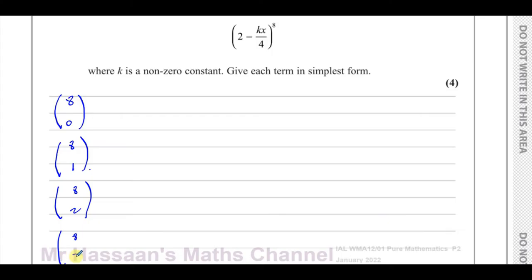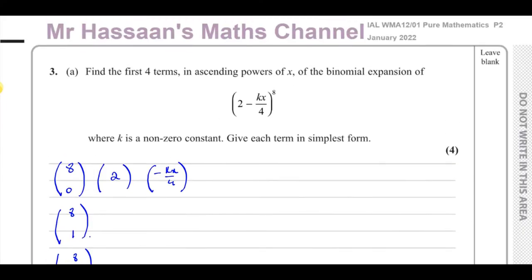We have the number 2 here, and the term which is (minus kx over 4). For ascending powers of x, one power starts from the highest and the other from the lowest — they have to add up to give 8. So I'll put the 2 with power 8 and the bracket starting at power 0.